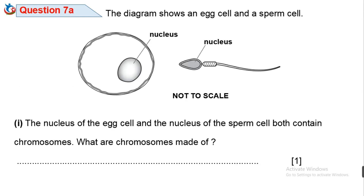Question 7. The diagram shows an egg cell and a sperm cell. 7A1: The nucleus of the egg cell and the nucleus of the sperm cell both contain chromosomes. Chromosomes are made of DNA — although gene is acceptable, the more precise answer is DNA. Chromosomes contain DNA and are present in the nucleus.